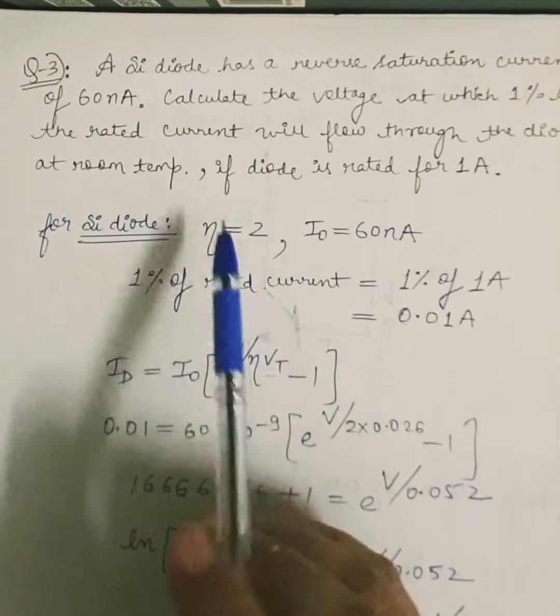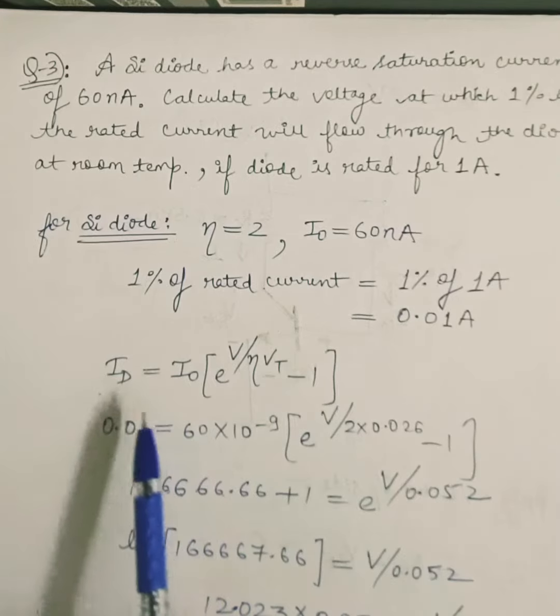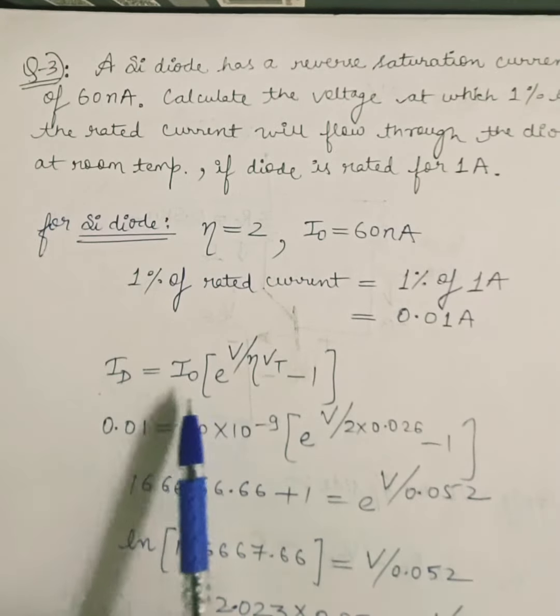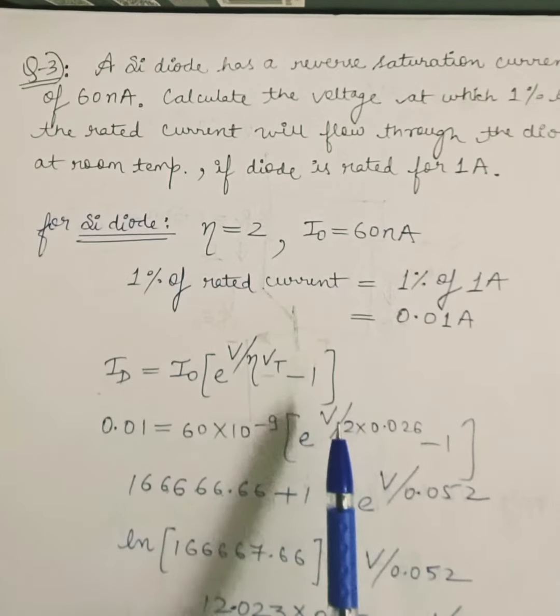Hello guys, so today we will learn about diode current equation. It is given by Id equals I0 e to the power V upon eta Vt minus 1.